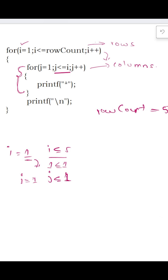Because this condition is true, we are going to print our first star. In the second iteration of j, the value of j becomes 2. Now 2 less than or equal to 1 is not true, so we are going to come out of this for loop, and the value of i will get incremented.